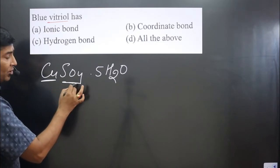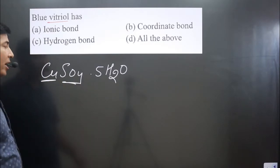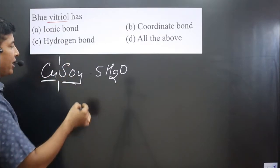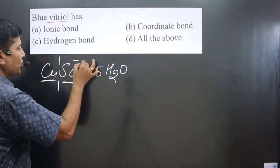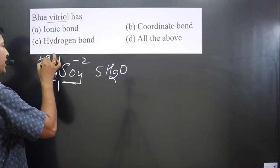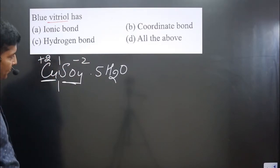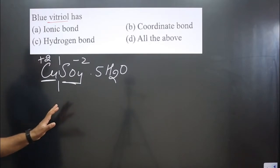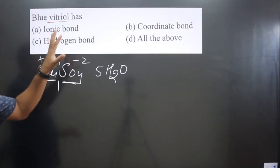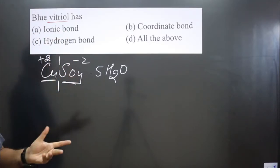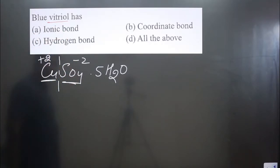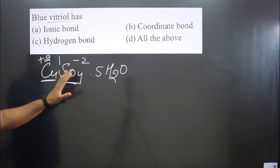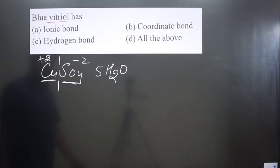Copper is a metal and sulfate is a polyatomic ion. Sulfate always carries a minus two charge, so copper will be present in plus two charge. Since we have a cation and a polyatomic anion with opposite charges, there will definitely be an ionic bond. So ionic bond is present.